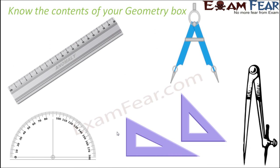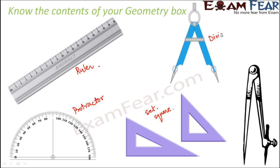Even before we do that, let's understand the contents of our geometry box, because without these you would not be able to draw geometrical shapes. Inside your geometry box you have: a ruler, a protractor, two set squares, a divider, and a compass. The ruler is mostly used for drawing lines. The protractor is used for measuring or drawing angles. The set squares are used to draw perpendiculars or parallel lines. The divider is used to measure lengths of line segments. The compass is used to draw circles and angles.